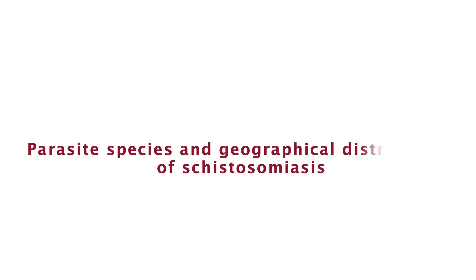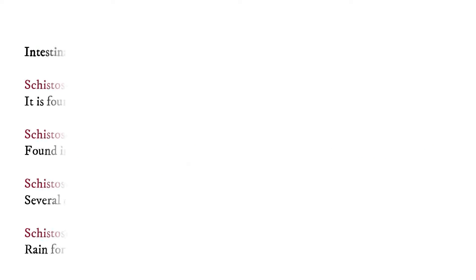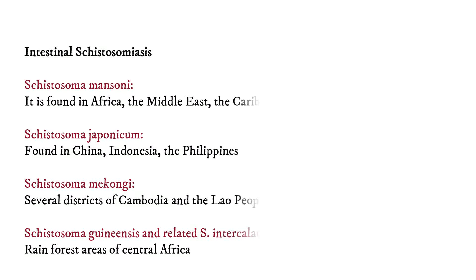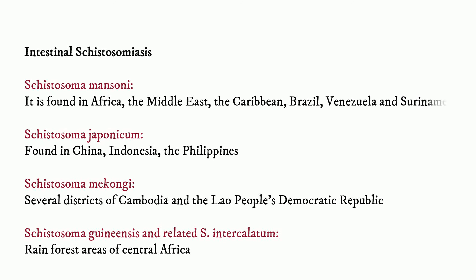Moving on to parasite species and geographical distribution of schistosomiasis. The causes for intestinal schistosomiasis include Schistosoma mansoni, which is found in Africa, the Middle East, the Caribbean, Brazil, Venezuela, and Suriname.